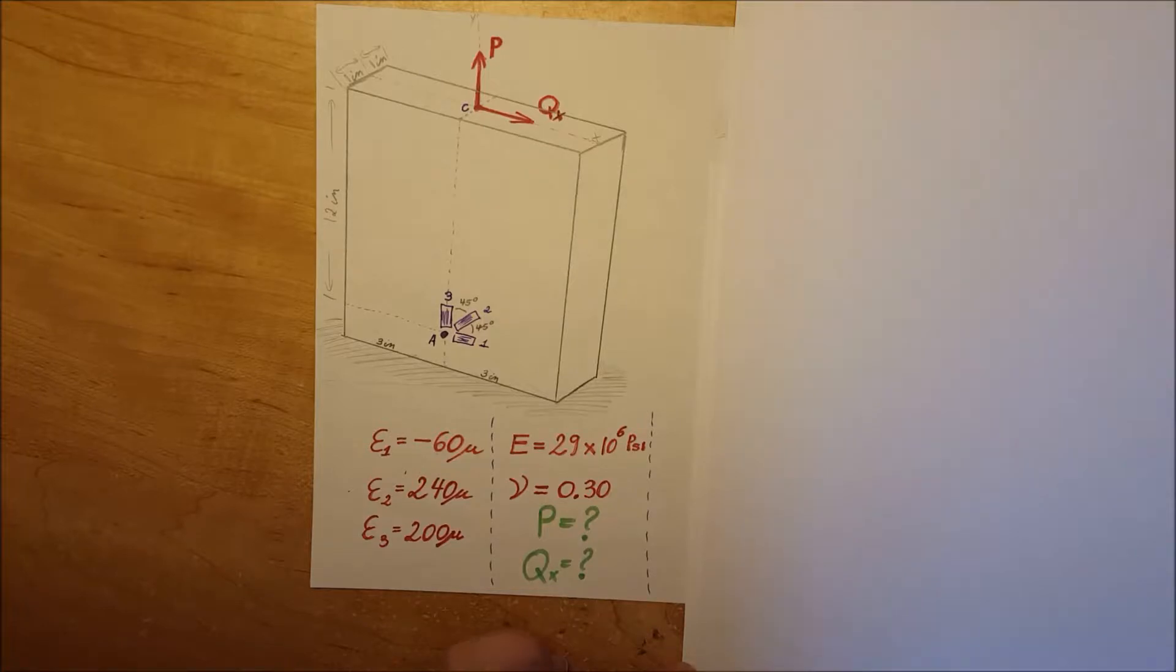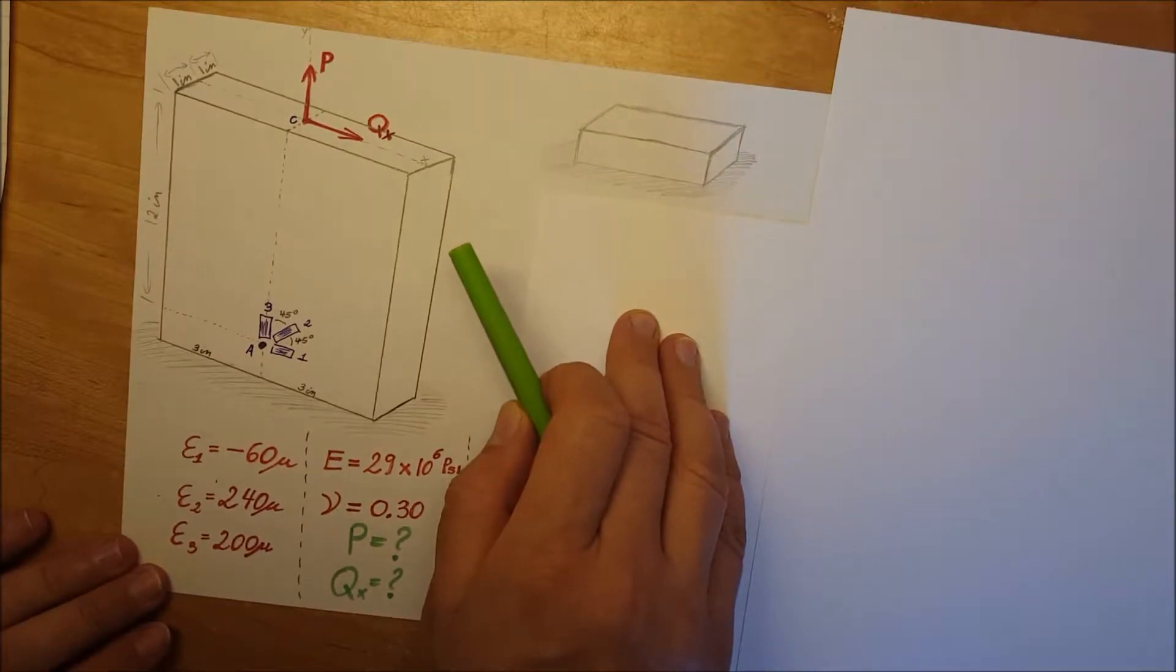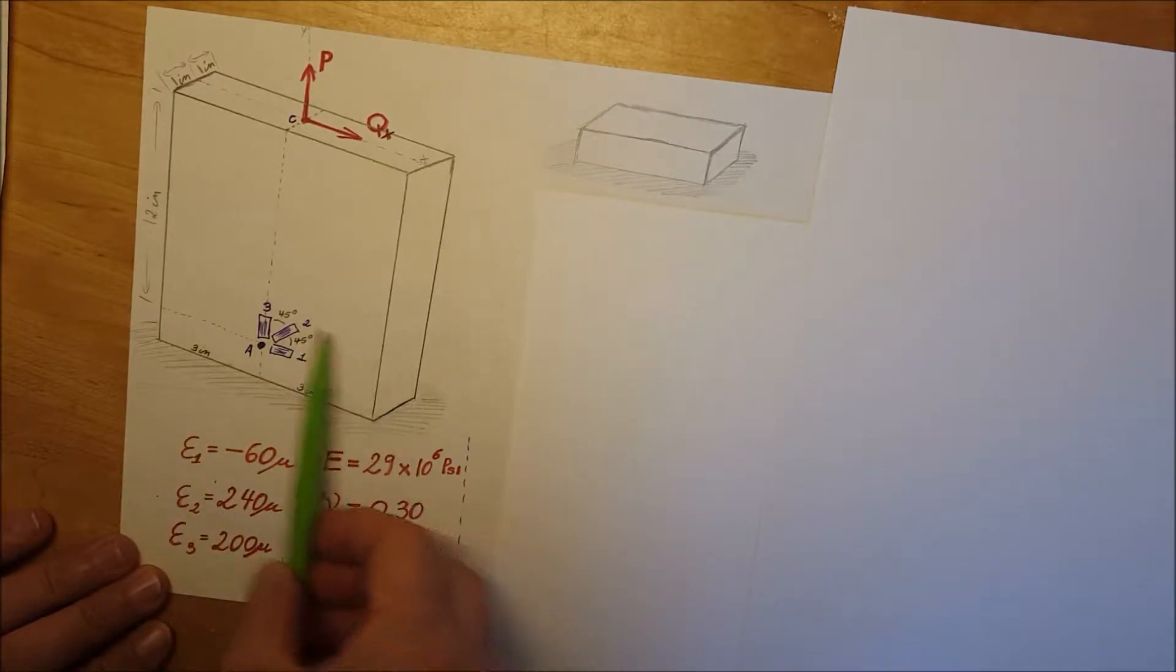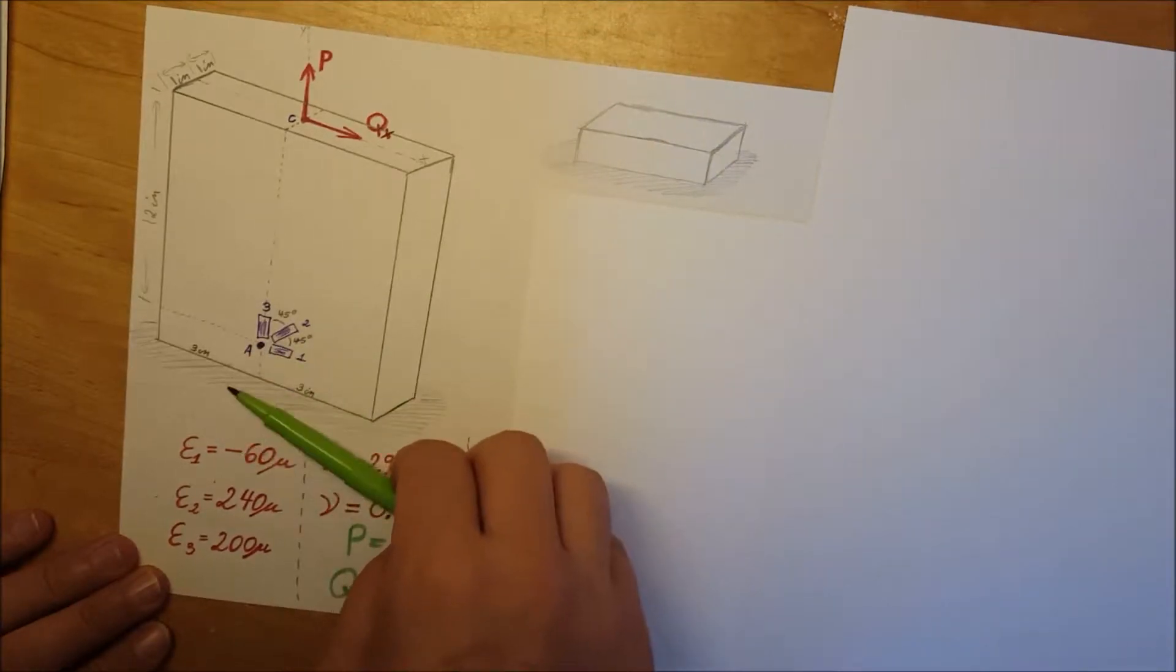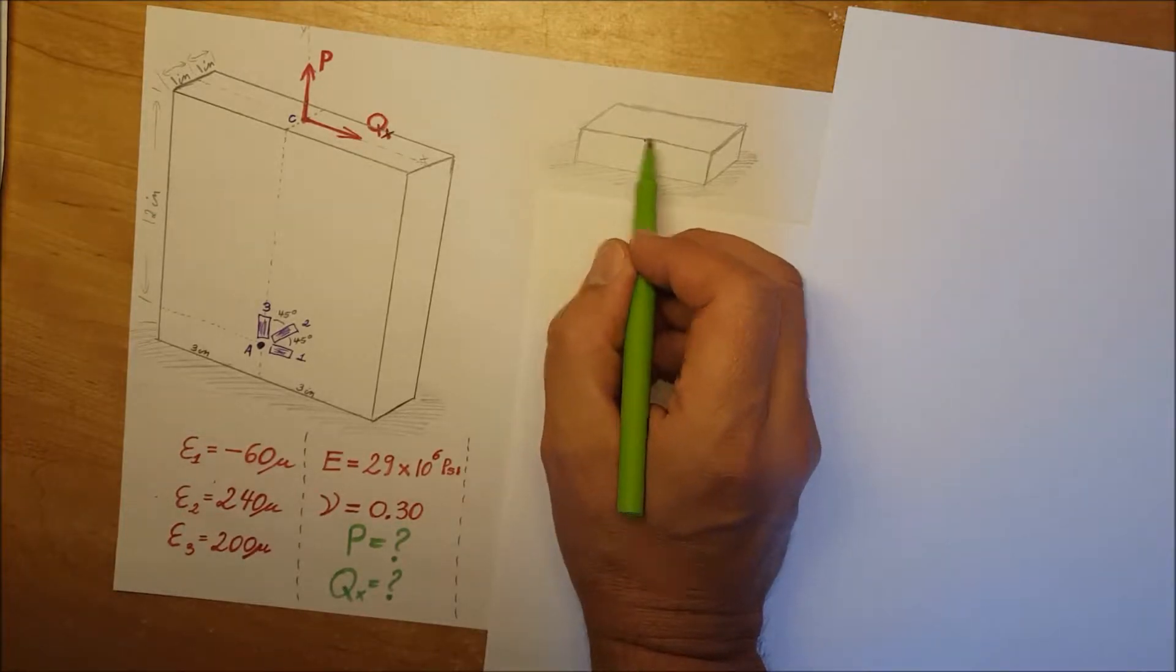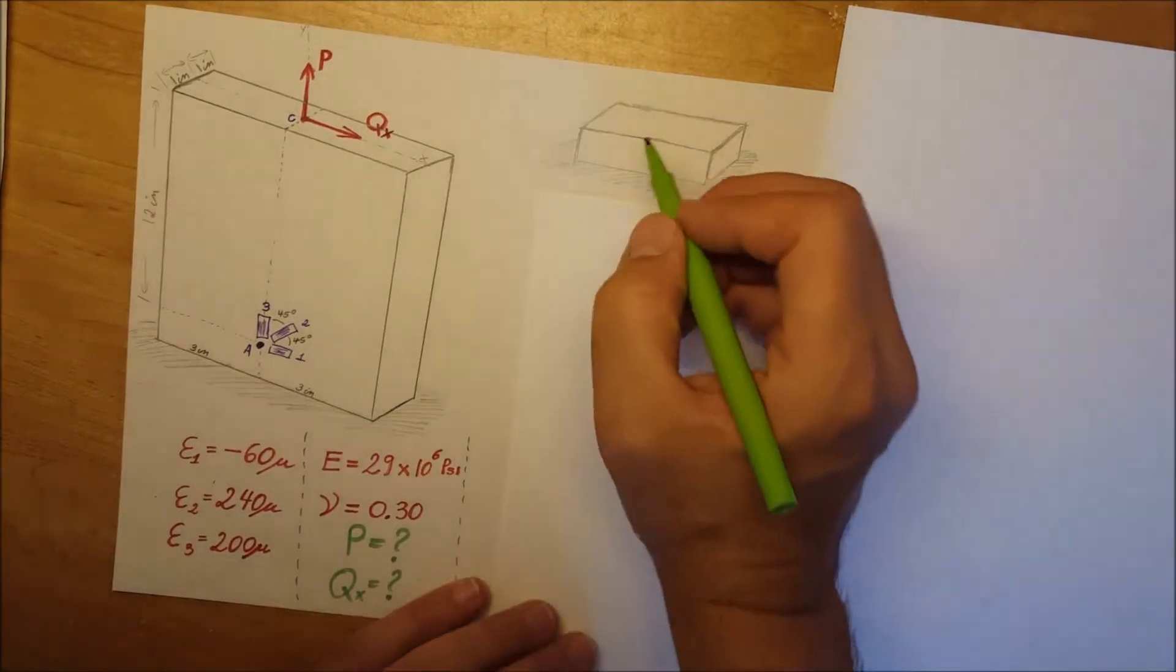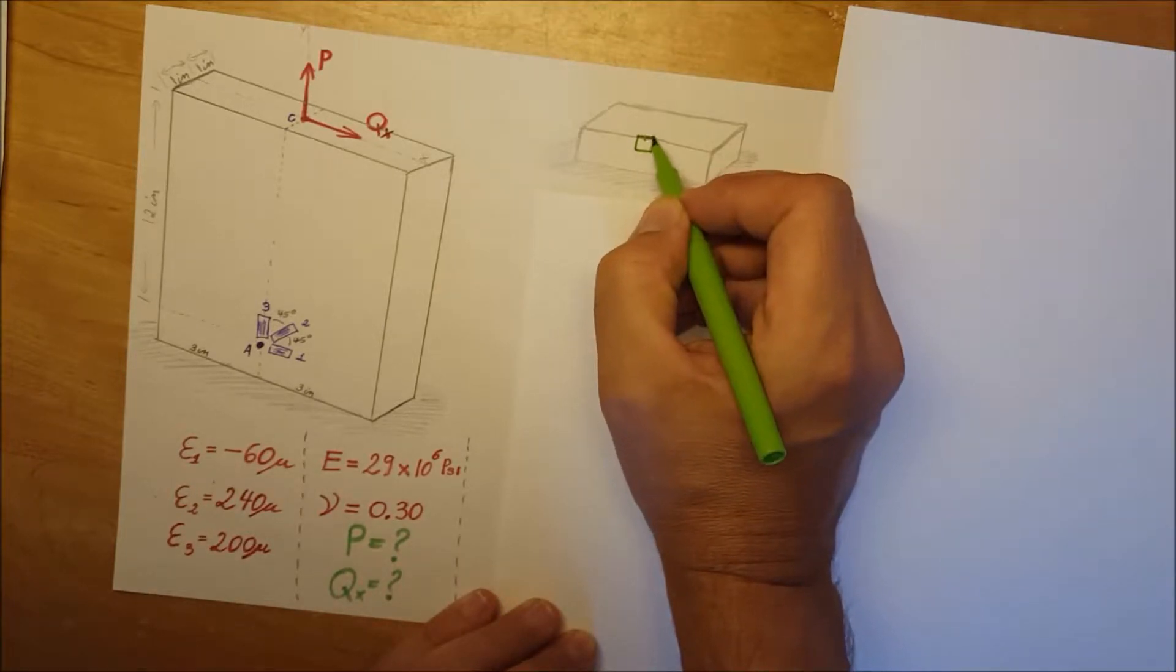We need to find the value of force P and force Qx. First, let's better understand what's going on at point A. I'm going to make a cross section at point A. This drawing represents whatever's left from the ground up to point A and the cross section. Let's draw a state of stress at point A where the rosette is located and see what kind of forces we're dealing with.